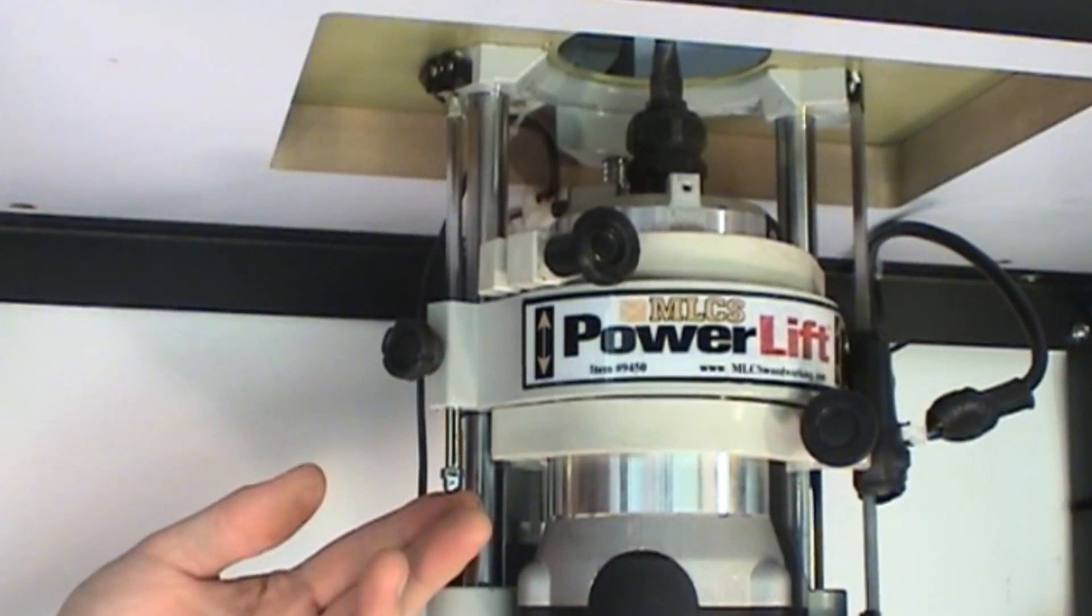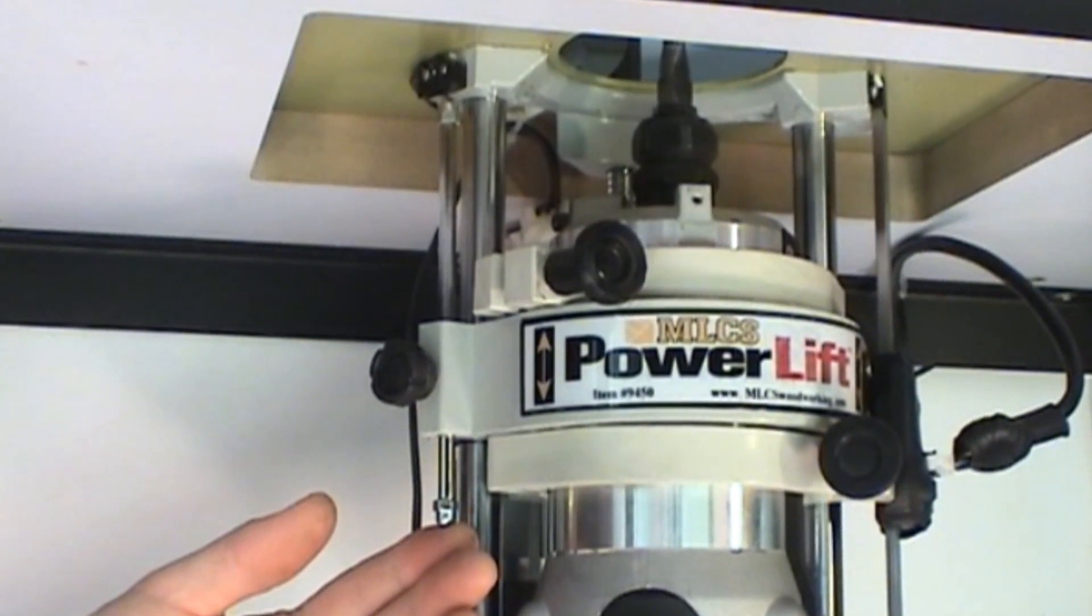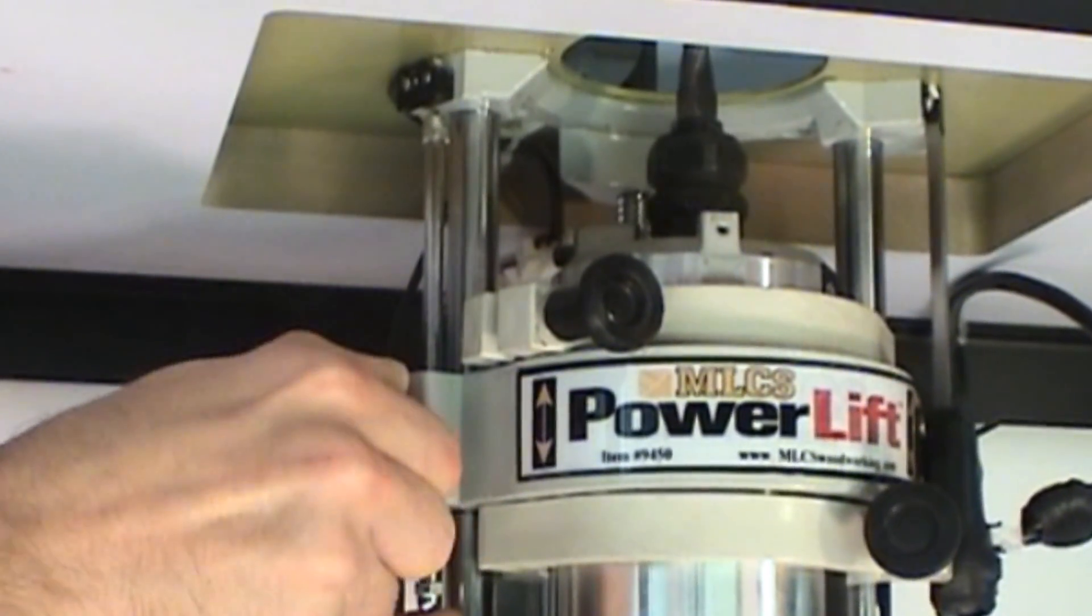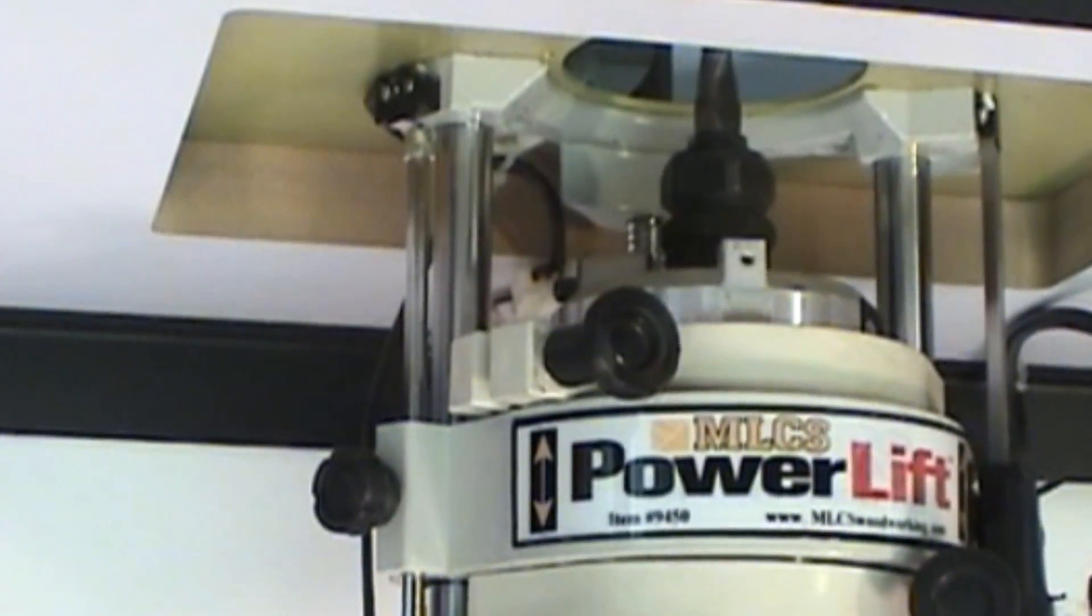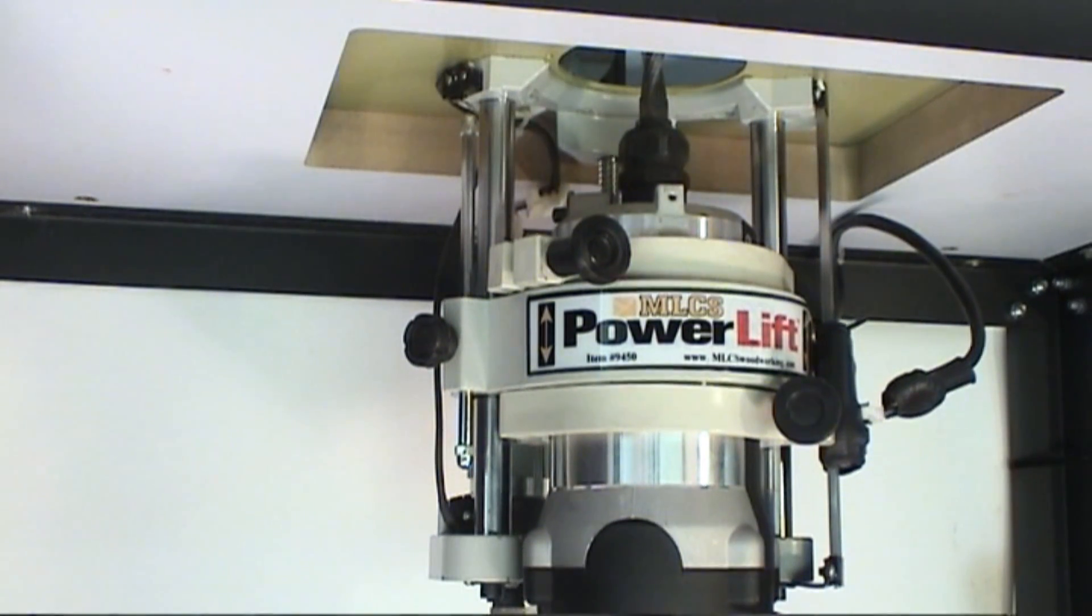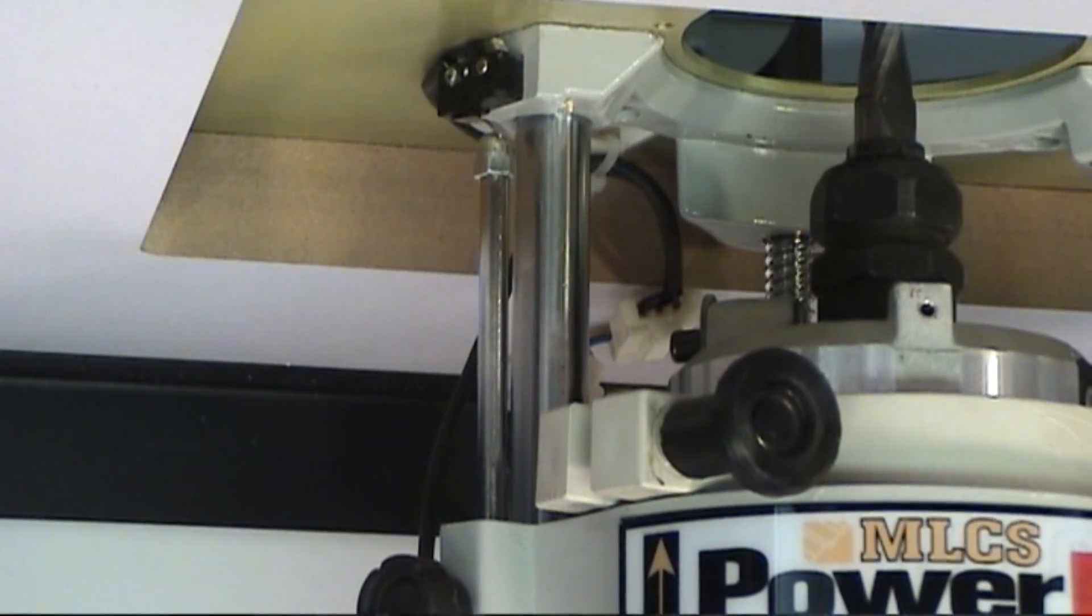PowerLift has an integrated depth stop. You can set the max height that the bit can protrude above the table. This is especially useful for repeatable cuts like mortising. You just set the max depth stop and then the lift will return to that point and automatically stop each time.